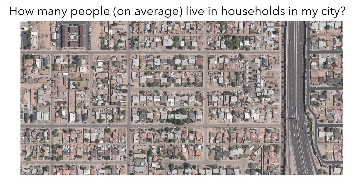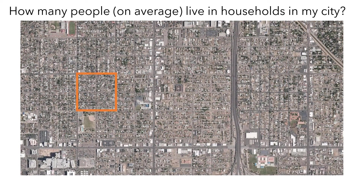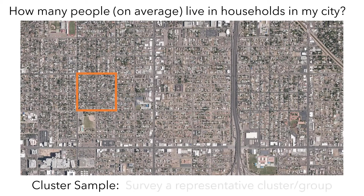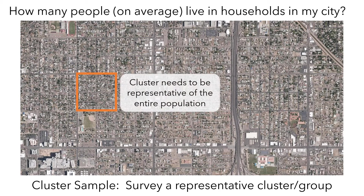Let's say that a particular section of your city had a good mix of households matching the overall demographics — things that might affect household size like income, education level, race, and religion. Then you could do a cluster sample, which is where you survey all of the households in this representative cluster or group. This method can be more efficient in terms of time and resources, but it requires that you know the cluster is representative of the entire population.